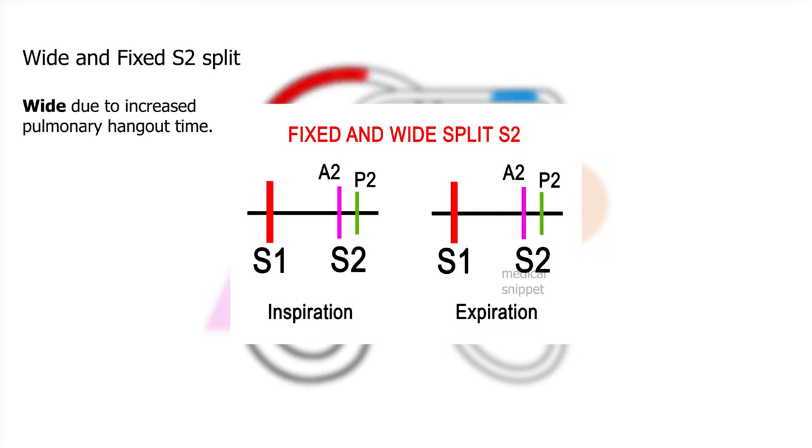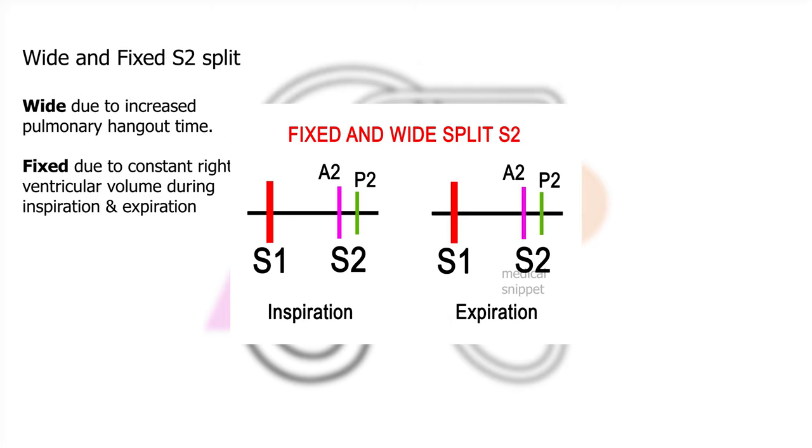The second heart sound is wide due to increased flow across the pulmonary valve. This makes the pulmonary valve close a bit later than normal, that's why the second heart sound is wide split. The split is fixed due to constant right ventricular preload both during inspiration and expiration. This is due to the left to right shunt.